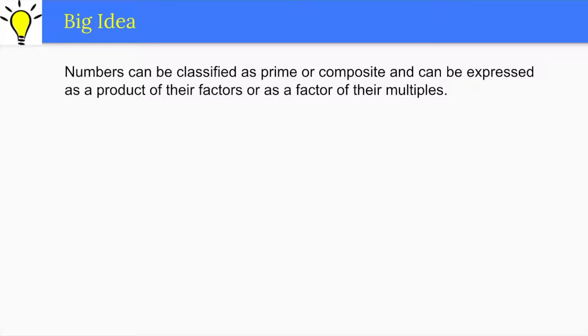For example, the number 7 is prime because it only has two factors, one and itself. It is the product of 1 times 7. It is also a factor of its multiple, the number 21.